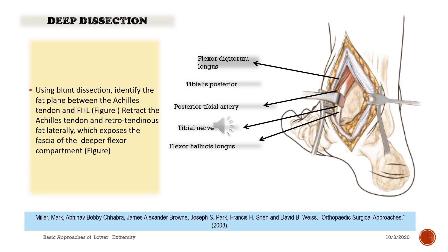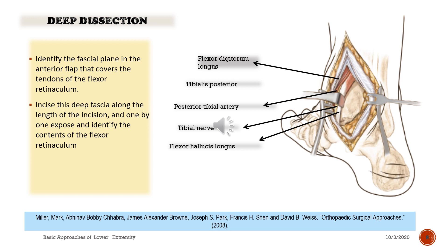Retract the Achilles tendon and retrotendinous fat laterally, which exposes the fascia of the deeper flexor compartment. Identify the fascial plane in the anterior flap that covers the tendons of the flexor retinaculum. Incise this deep fascia along the length of the incision and one by one expose and identify the contents of the flexor retinaculum.